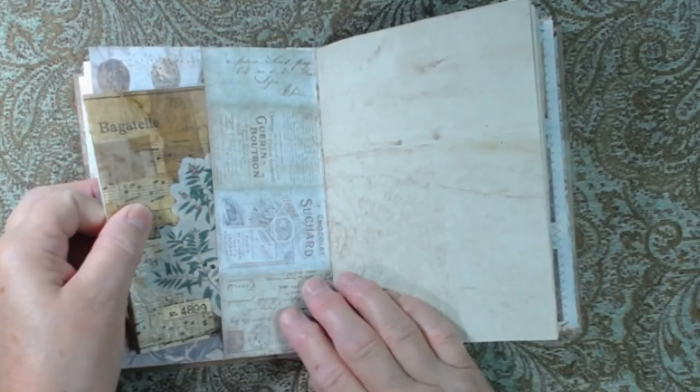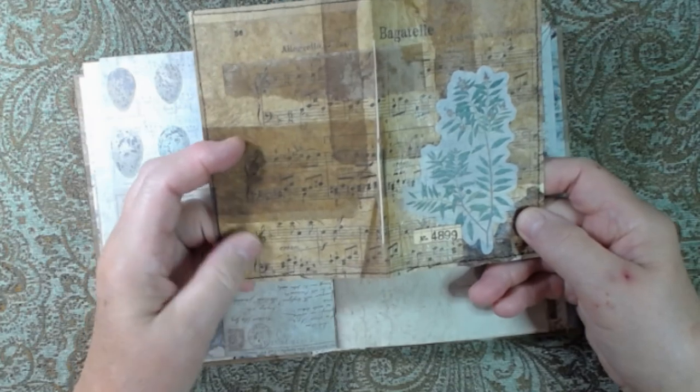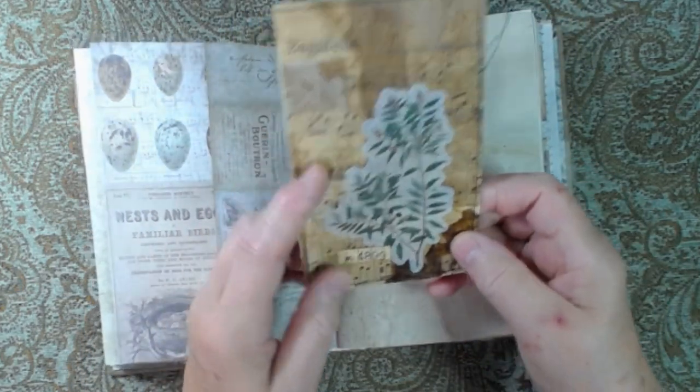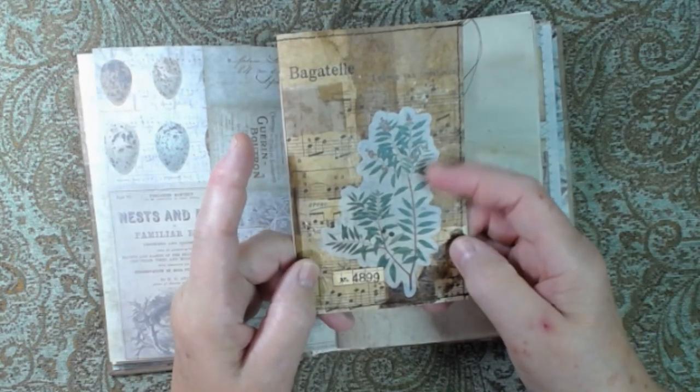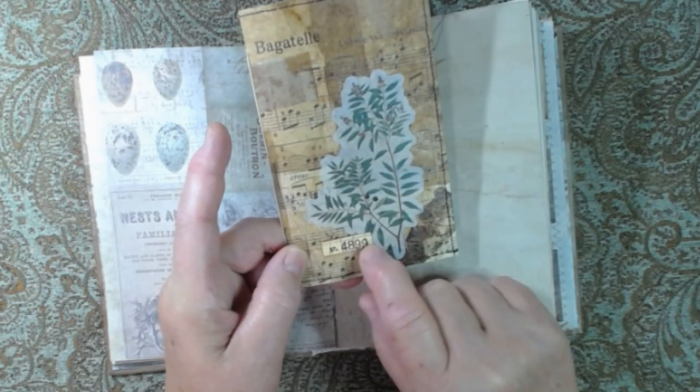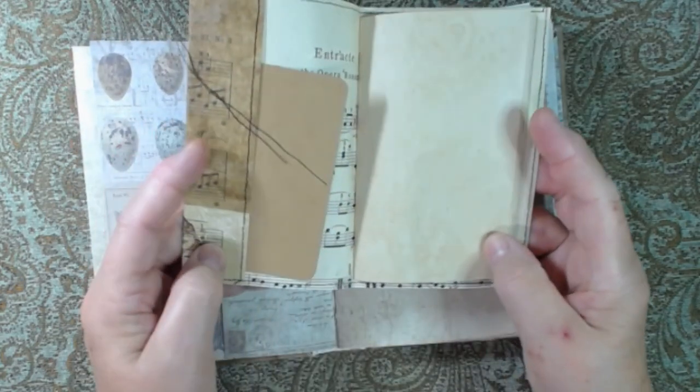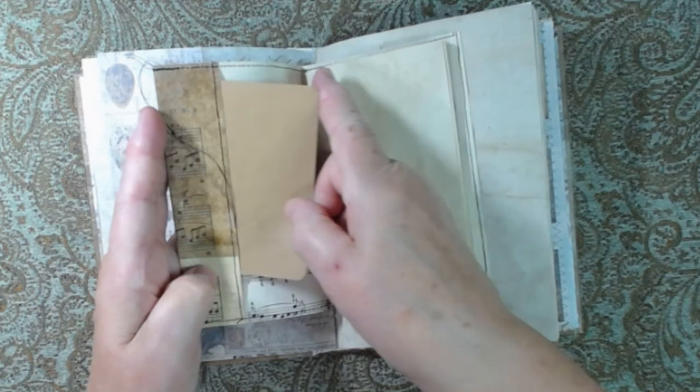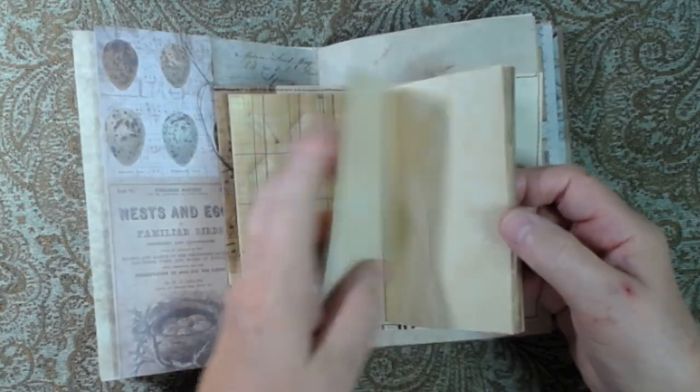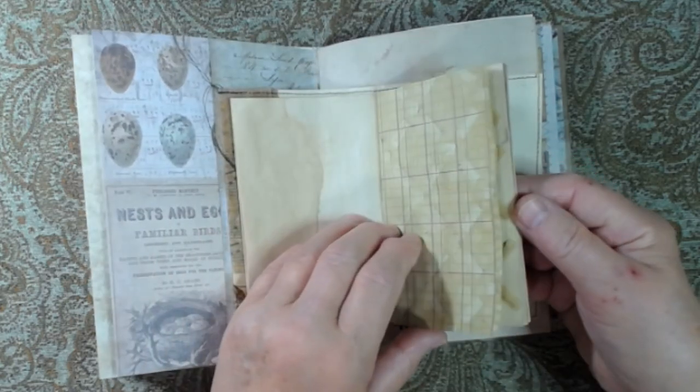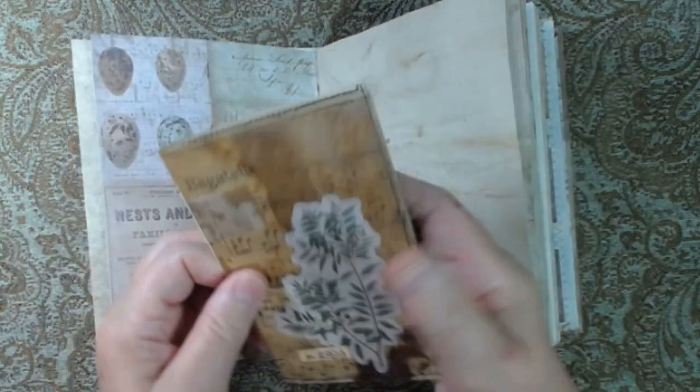Here we have a pocket. I made another little notebook from teabag paper that I attached to music paper. I have a little washi-type sticker of a botanical image. Then I stamped this onto some grid paper and sewed all around it. There's a little journaling card inside and some different coffee-dyed papers. So there's a fun little notebook.